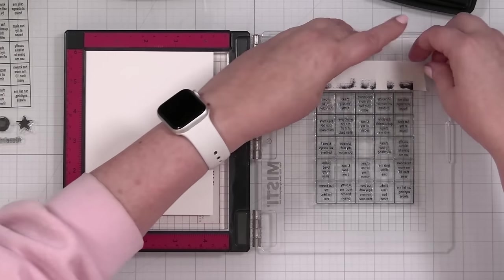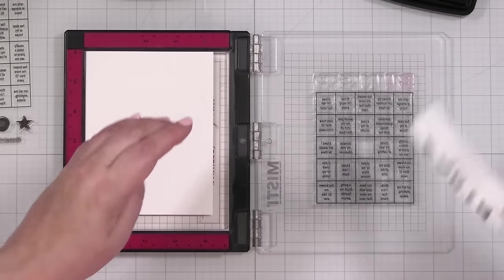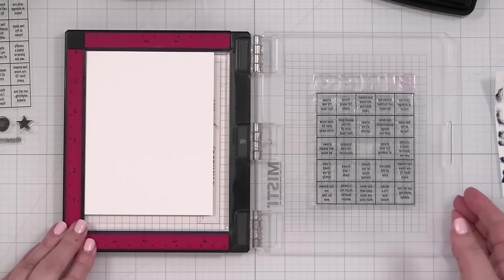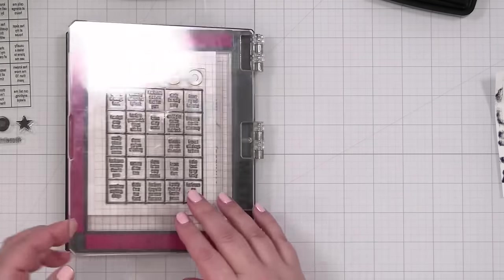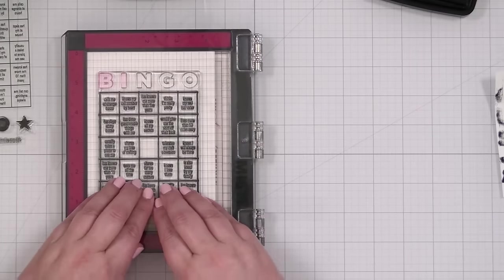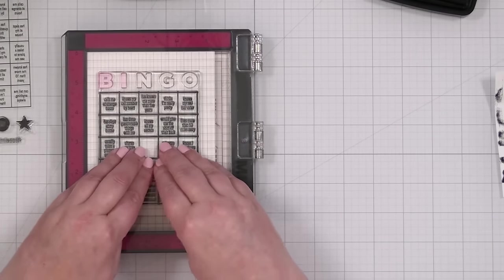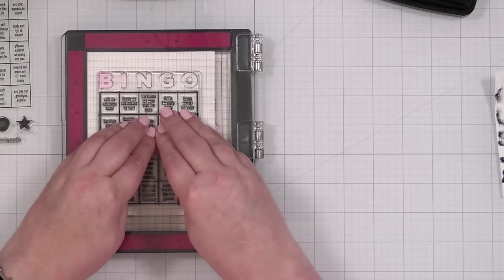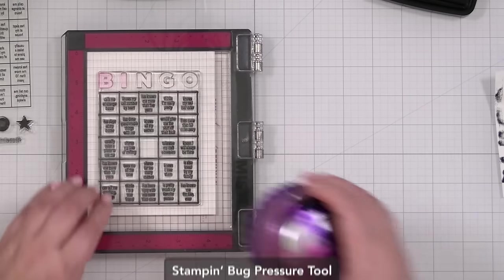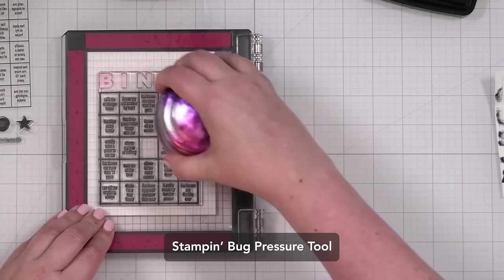Now, don't forget, take that off. I'm going to set that aside and we're going to bring this down and transfer. Now I'm going to walk my hands over this. I have a pressure tool as well. So maybe I'll bring that in because I want to give the ink a chance to transfer.